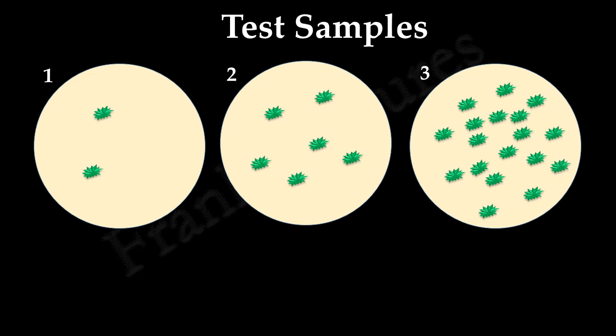Let's now understand how the relative proportions of antigen and antibodies influence the formation of precipitate. Let's say these are three test samples having soluble antigens in increasing amount. Suppose first test sample has only two antigens, second has six, and third has 18 antigens.